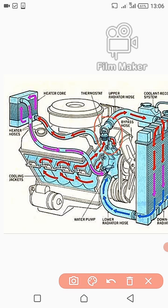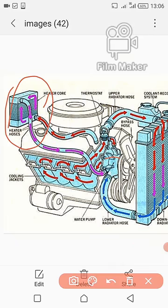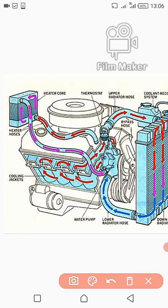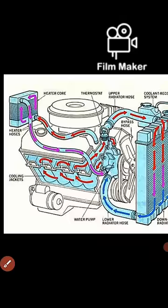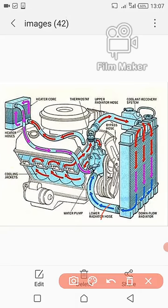Another component is the heater core. Hot engine coolant flows through the heater core, and this is where the heat is obtained for the car's cabin heating system when needed. After passing through the heater core the coolant returns to the pump, and the rest of the system continues as usual. That is basically how the engine cooling system operates.